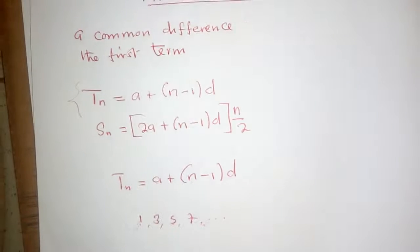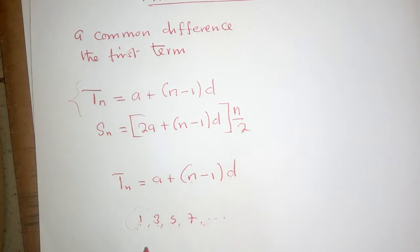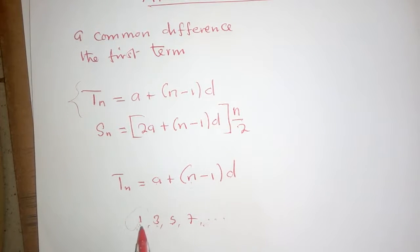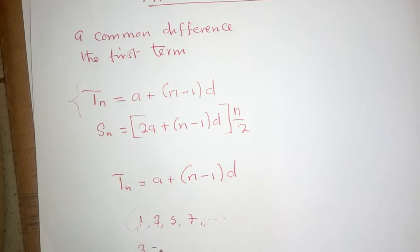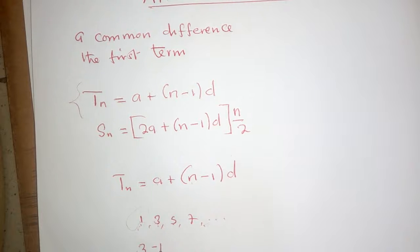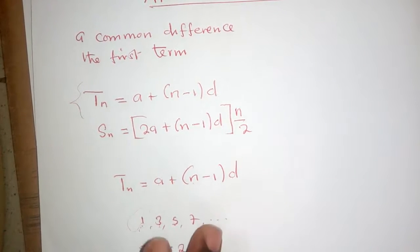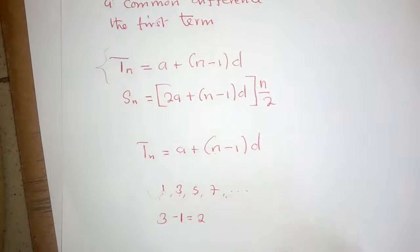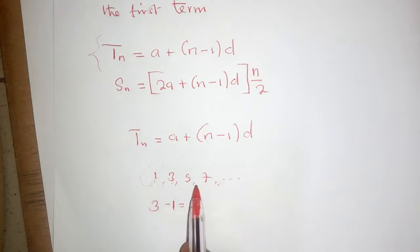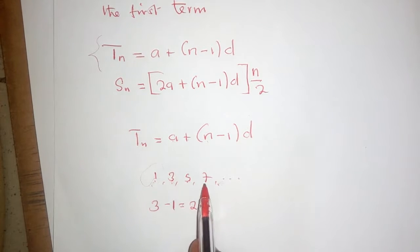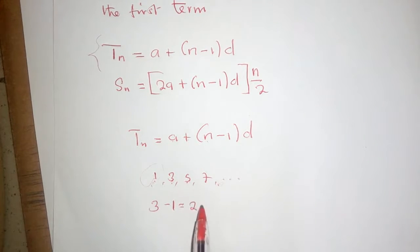To find the common difference, take the number to your right and subtract the number to your left. For example, 5 minus 3 equals 2, or 7 minus 5 equals 2. So the common difference d is 2 in that sequence.